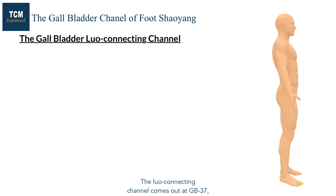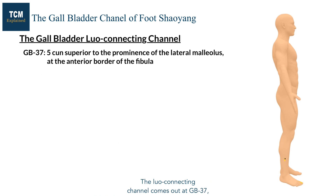The luo connecting channel comes out at GB37, connects with the liver channel, and goes down to disperse in the foot.